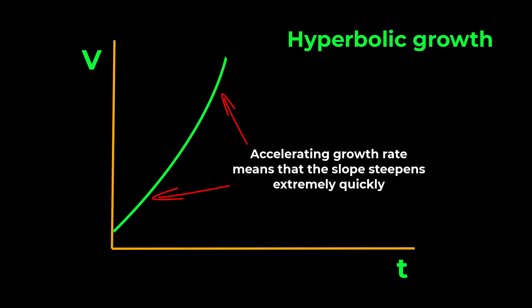So hyperbolic growth has an accelerating positive feedback loop, while in exponential growth, the feedback loop is constant.